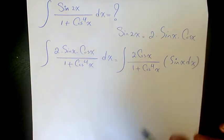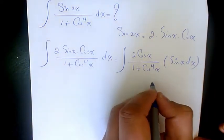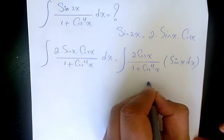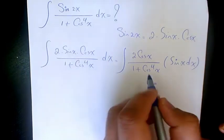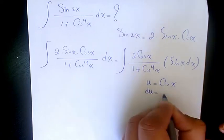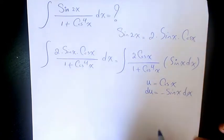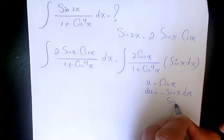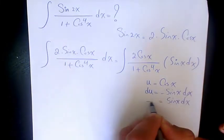Then what you can do, you can say u equals cosine x, so du will be negative sine x dx. We have sine x dx here, we can say sine x dx equals negative du.